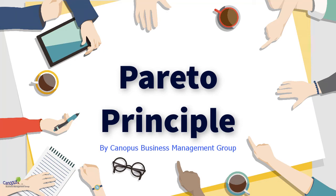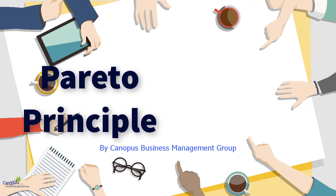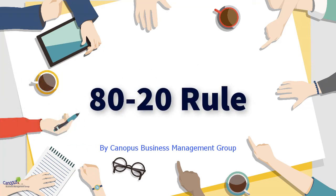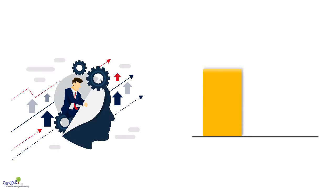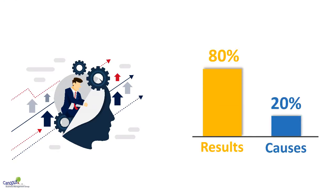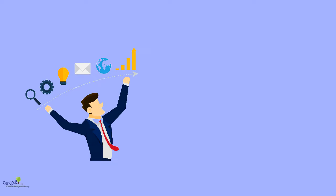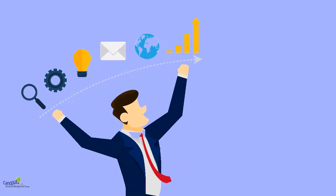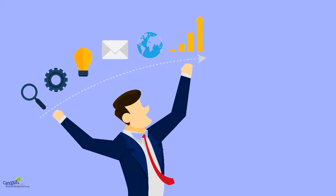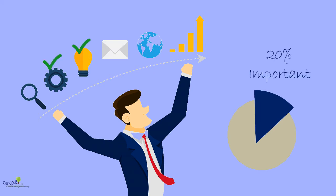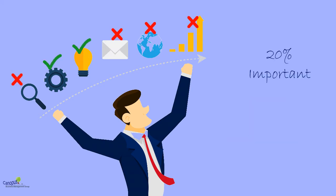The Pareto Principle, also known as the 80-20 rule, states that 80% of the results are attributable to 20% of the causes. This principle simply allows us to focus our efforts on 20% of the items that are important, knowing that the other 80% are not.